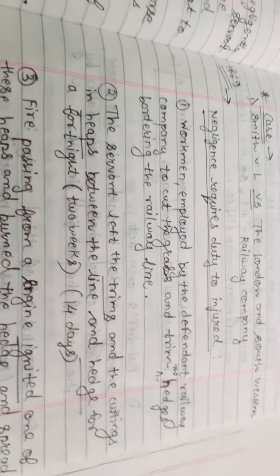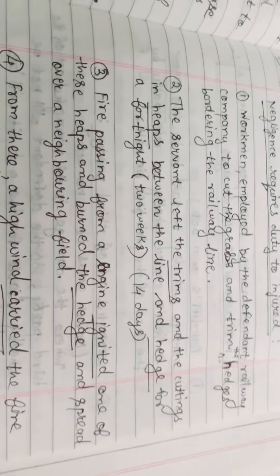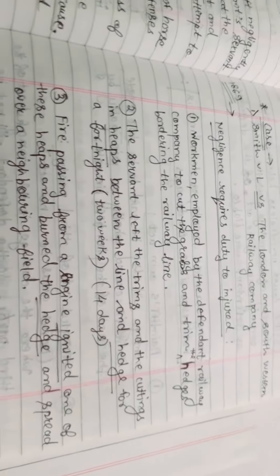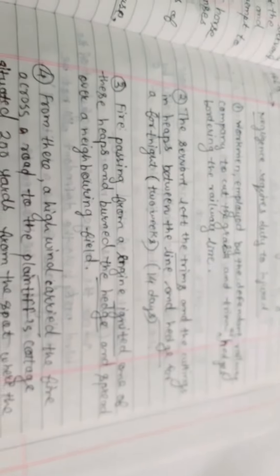The servant left the trimmings and cuttings in heaps between the railway line and the hedge for a fortnight, which is 14 days. He left the trimmings between the railway line.